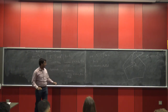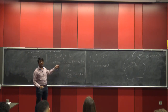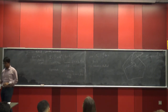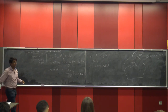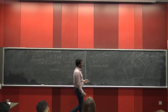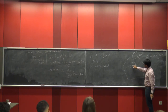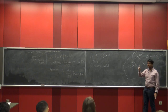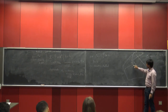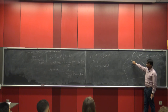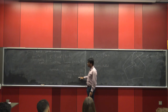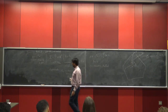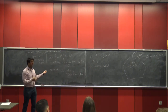The benefit of the approximate method over the exact method is lower computational complexity. We will prove in the next class that if you are close to the central path, all you need is one Newton's step at every point to remain close to the central path, and you still converge to the optimal solution. That is the main result we will study in detail next time.